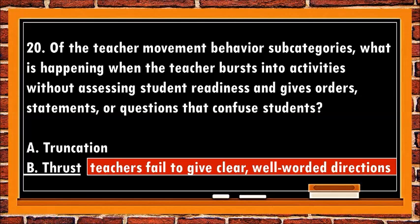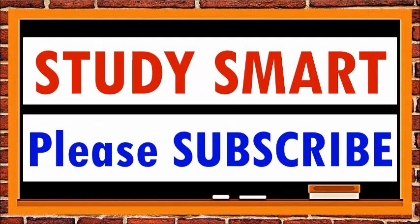The best answer is b. Thrust. Thrusting occurs when teachers fail to give clear, well-worded directions when group attention was upon them. Nondescript directives result in student confusion, complaints, multiple questions as to what to do, conversations with other students, work refusals, and so forth.